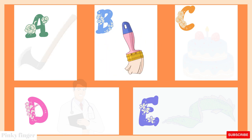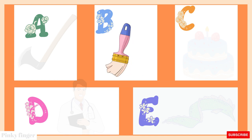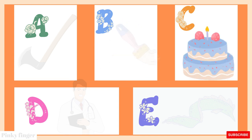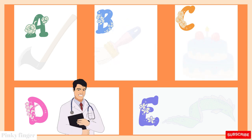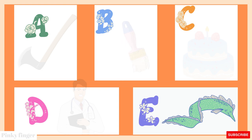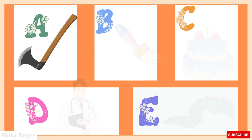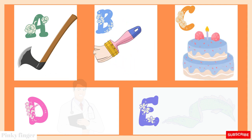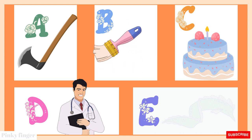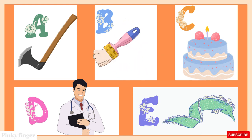B is for Brush. Brush. C is for Cake. Cake. D is for Doctor. Doctor. E is for Eel. Eel. C is for Cake. D is for Doctor. E is for Eel.